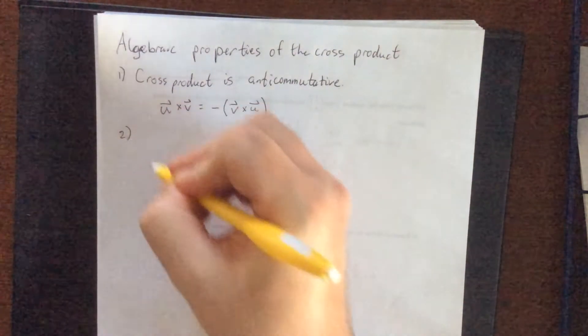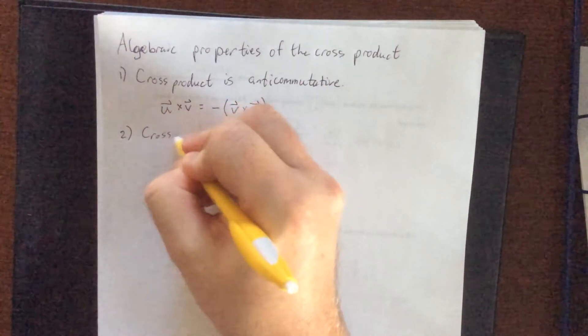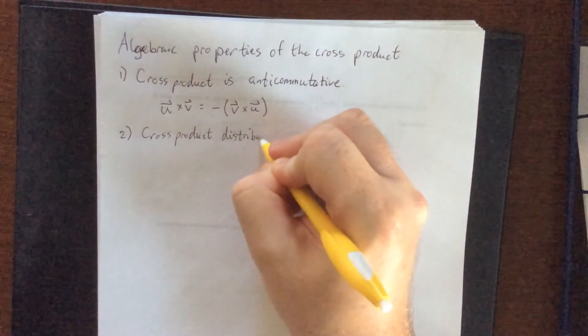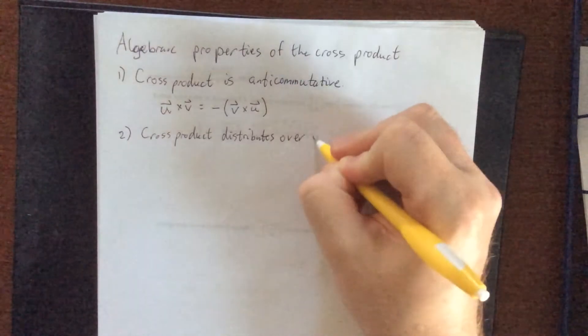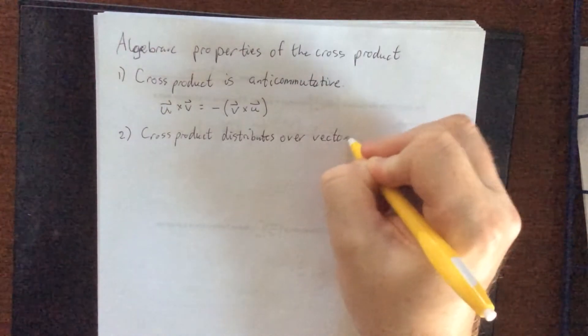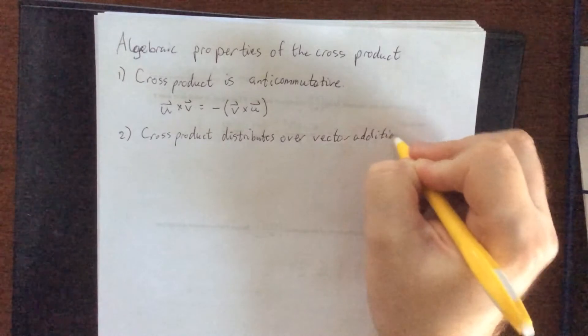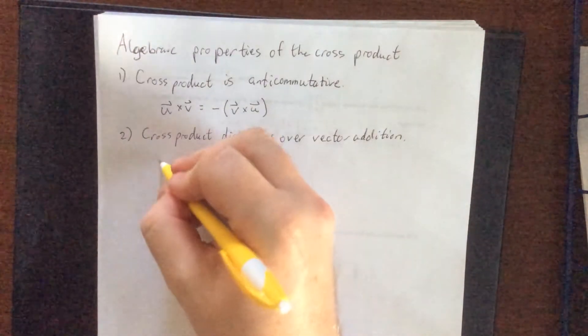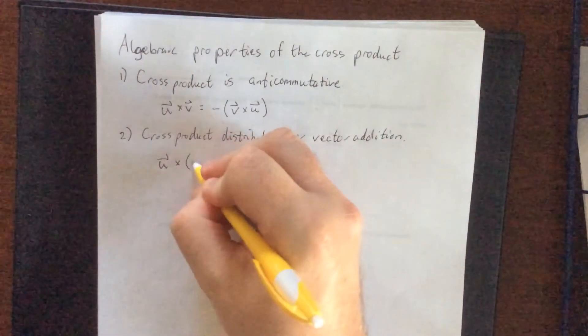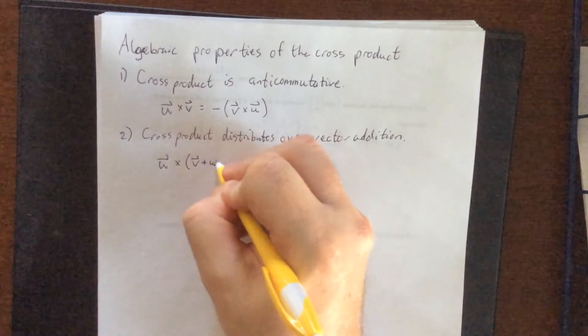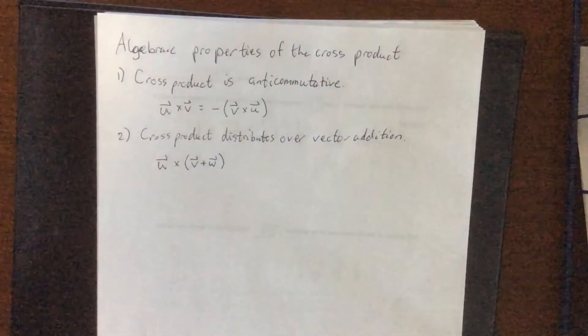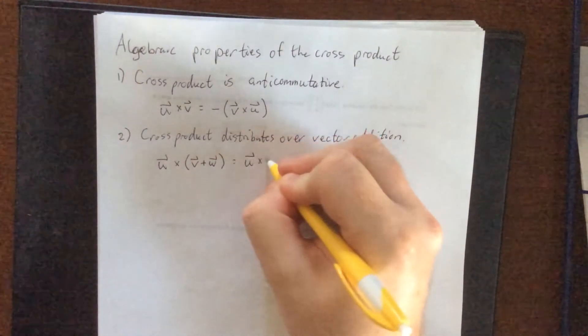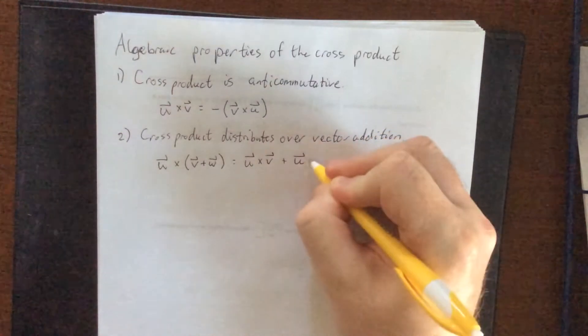The second one is that the cross product distributes over vector addition. So it is a form of multiplication and multiplication is supposed to distribute over addition, and we find out that it in fact does. So if I have two vectors being added together, like v plus w, then this will be equal to u cross v plus u cross w.